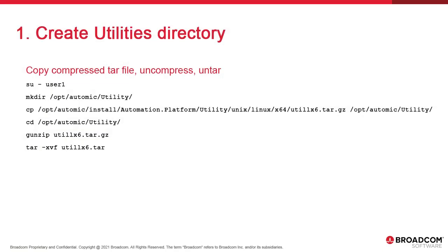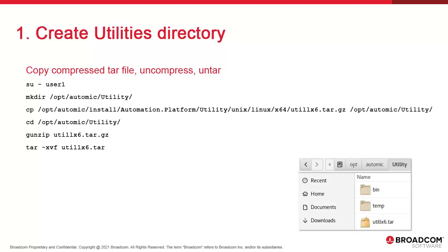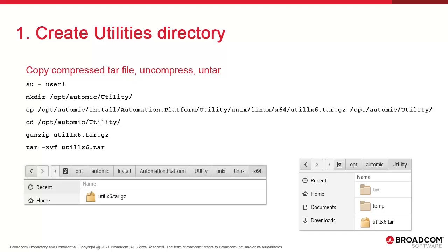First, we create the utility directory and untar the matching install package. We perform these tasks as the user assigned to the installation. We create a utility directory in /opt/atomic. We copy the util_x6.tar.gz file from the install package to the utility directory. That file is found in the utility directory of atomic.platform. Make sure to grab the right file based on your operating system and distribution. We then gunzip and untar the file.